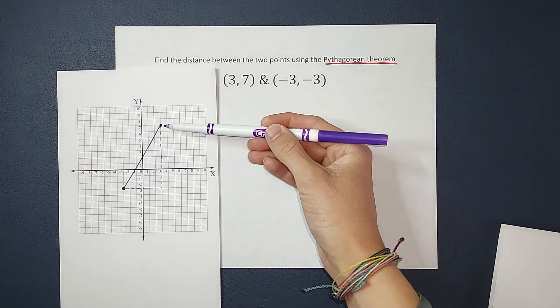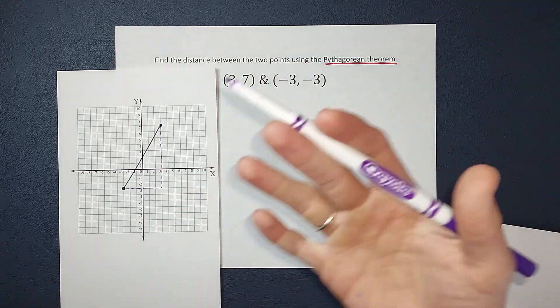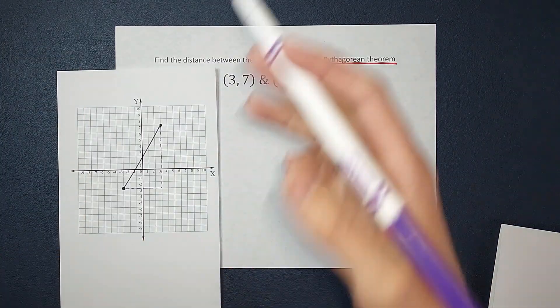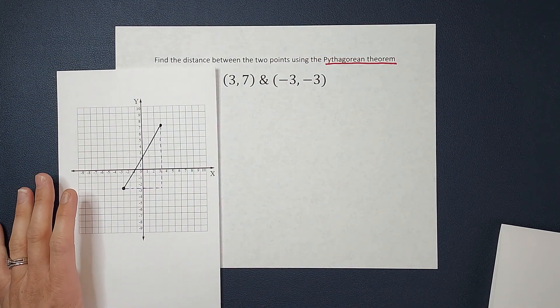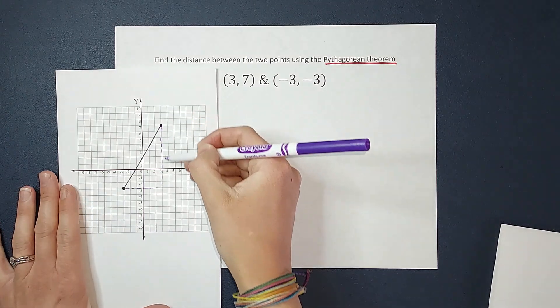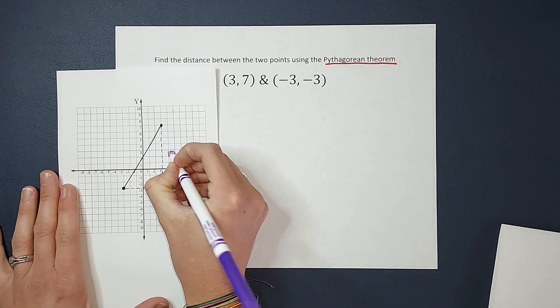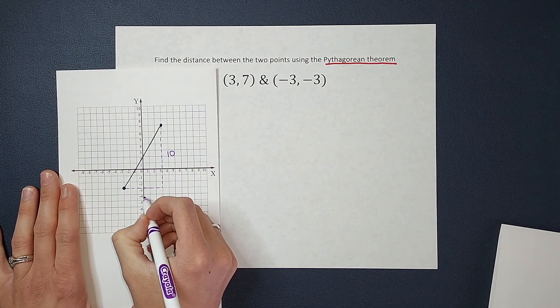Now, because these lines are straight and go along with the coordinate plane, it's easy to just count how long they are. From here to here, you could count it is just 10. And from here to here is 6.